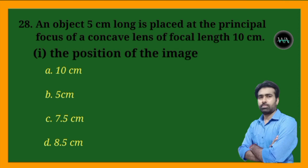Next question: an object 5 cm long is placed at the principal focus, and the focal length is 10 cm. Find the position of the image — try to answer without using the lens formula.